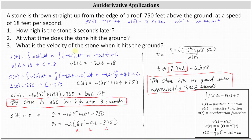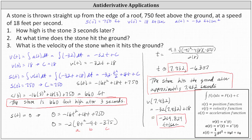Finally, for number three: what is the velocity of the stone when it hits the ground? To answer this, we determine v of 7.432. Our velocity function is negative 32t plus 18, so v of 7.432 equals negative 32 times 7.432 plus 18, which equals approximately negative 219.824 feet per second. The velocity of the stone is approximately negative 219.824 feet per second when it hits the ground. The velocity is negative because the stone is traveling downward when it hits the ground.